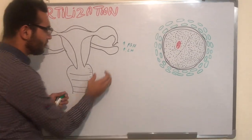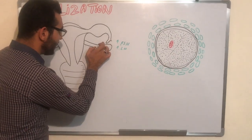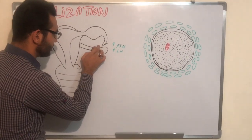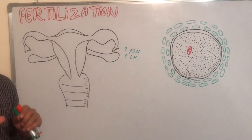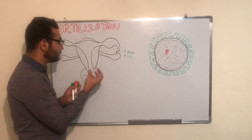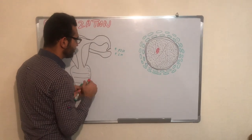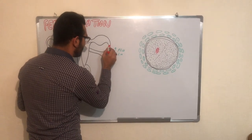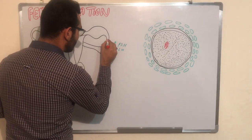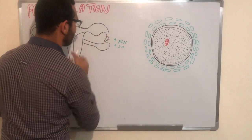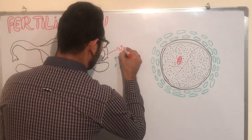The fimbria has cilia-like structures that release some chemicals. These chemicals capture the ovum and help it enter the fallopian tube. The part of the fallopian tube where this happens is called the infundibulum.